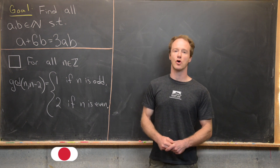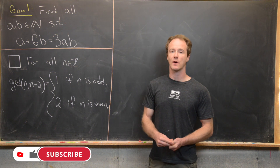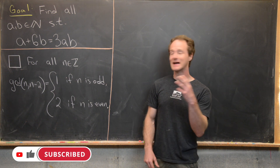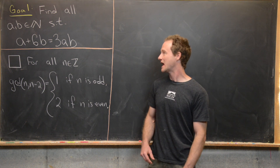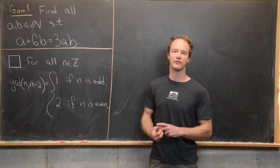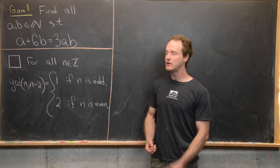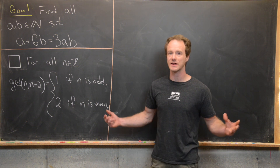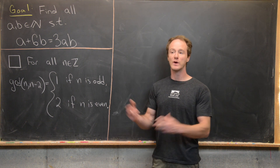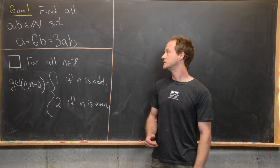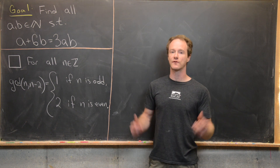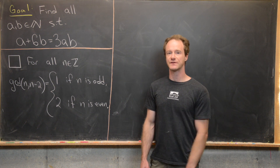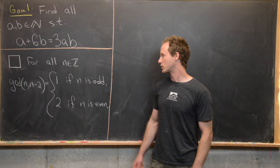Here we're going to solve a nice little equation over the natural numbers. Our goal is to find all natural numbers A and B satisfying the equation A plus 6B equals 3AB. If you consider 0 to be a natural number, then A equals B equals 0 is clearly a solution, so we will look for all solutions that are not equal to 0. We're going to use the following tool from elementary number theory, which we will prove.